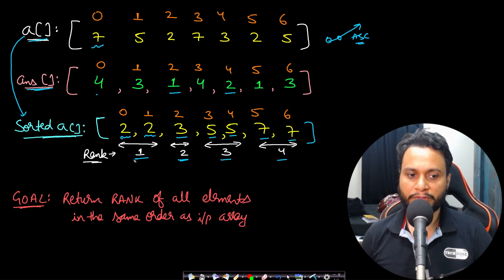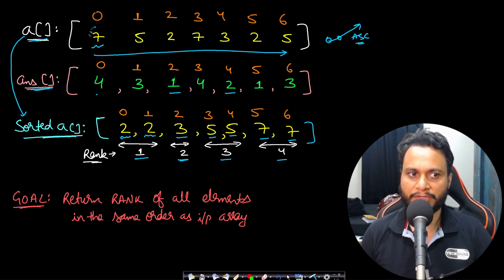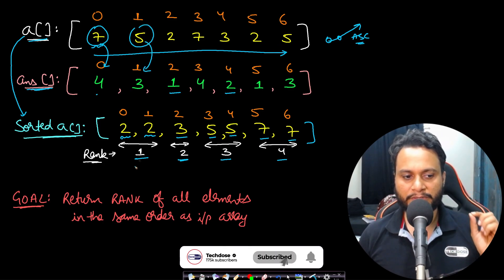But then we should also return the ranks just in the order of the input array. That means what is the rank of 7 should come in the beginning, the rank of 5 should come at index 1 and so on. So this is the entire problem here.